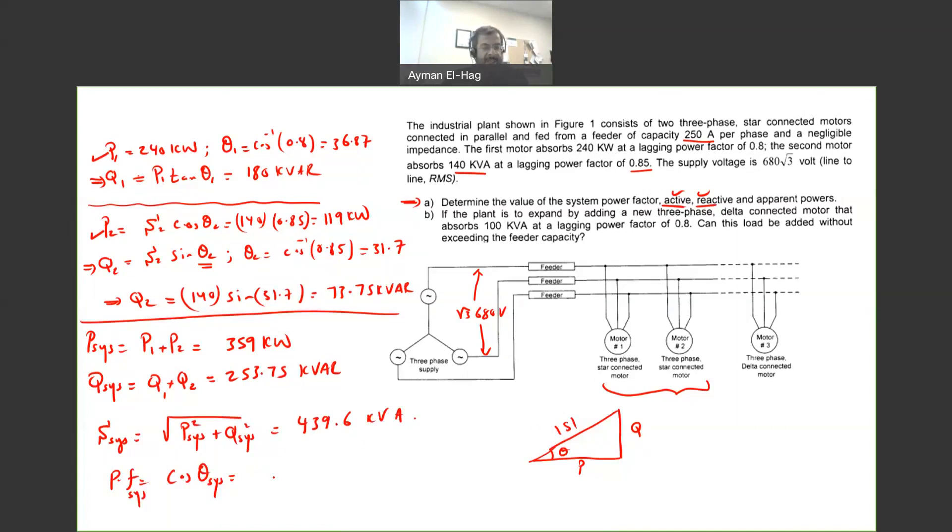Now the power factor, which is basically our cosine theta of the system, and this is the power factor of the whole, the two loads together. And again, from the power triangle, it is equal to P of the system divided by S of the system, which is equal to 0.816. And it is lagging power factor. It makes sense because both power factors are lagging. So definitely that should be a lagging power factor.